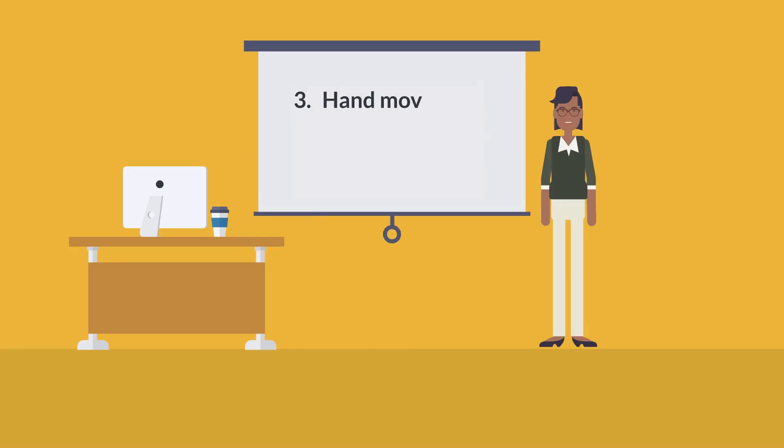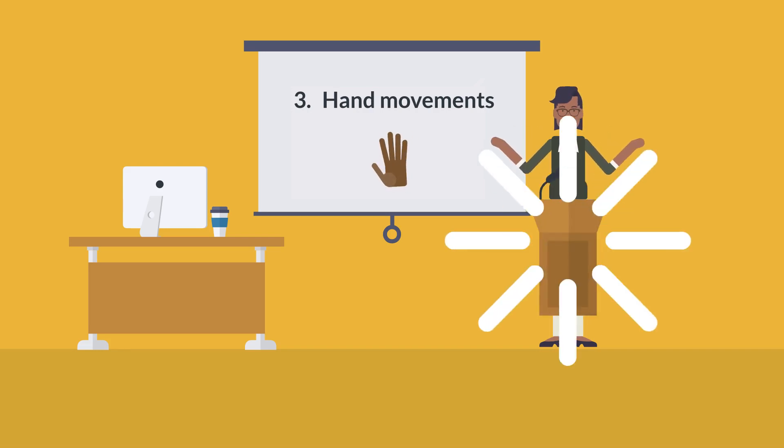Number three, hand movements. How do people use hand movements to make a point? Do they raise their arms when emphasizing something critical? Do they hold out both hands, or do they keep their hands firmly placed behind a podium?